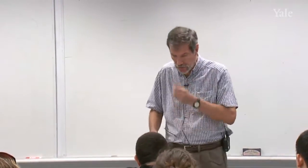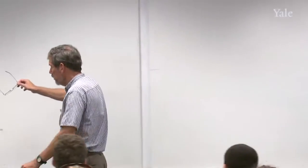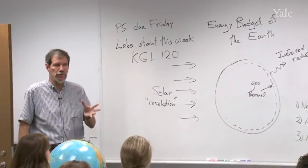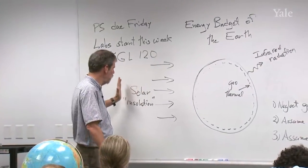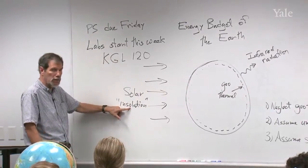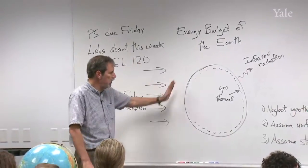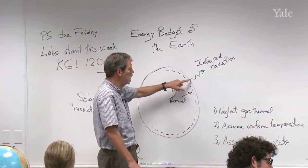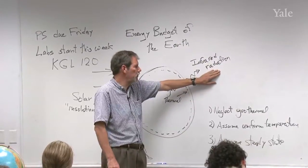So that's basic system analysis. We're going to apply that idea today to the energy budget of the Earth, and we'll be applying it later in the course to other simple systems relating to the Earth. In this one, the input is going to be the solar radiation — sometimes it's called insolation with an O. That's the rate at which solar energy is approaching and then finally being absorbed by the Earth. The loss is going to be the infrared radiation to space.